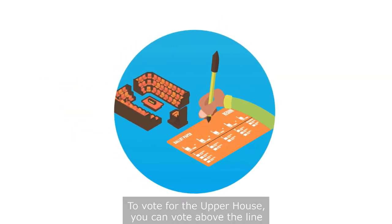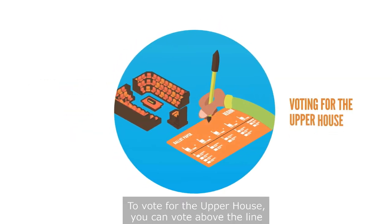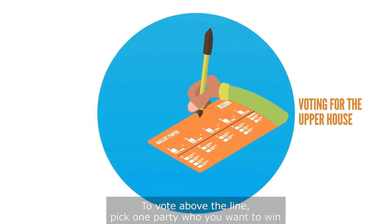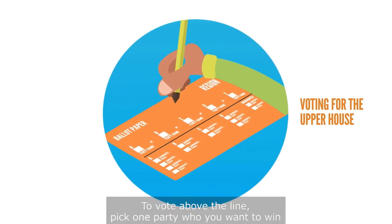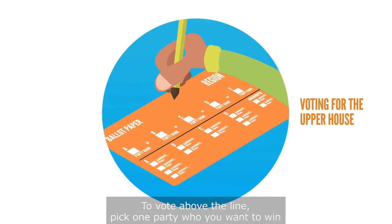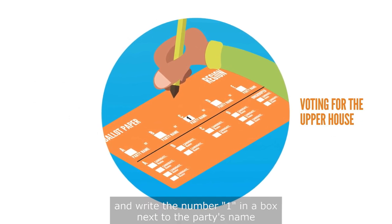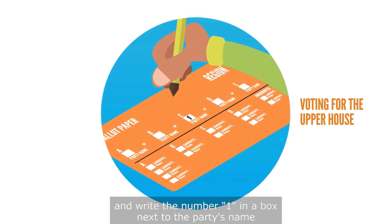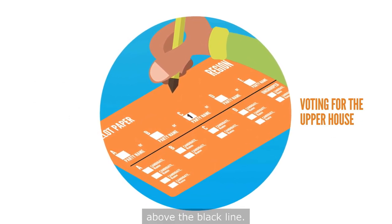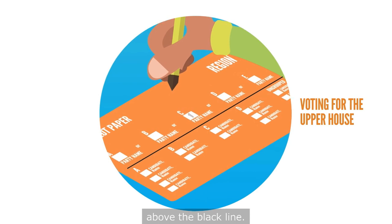To vote for the upper house, you can vote above the line or below the line. To vote above the line, pick one party who you want to win and write the number one in a box next to the party's name above the black line.